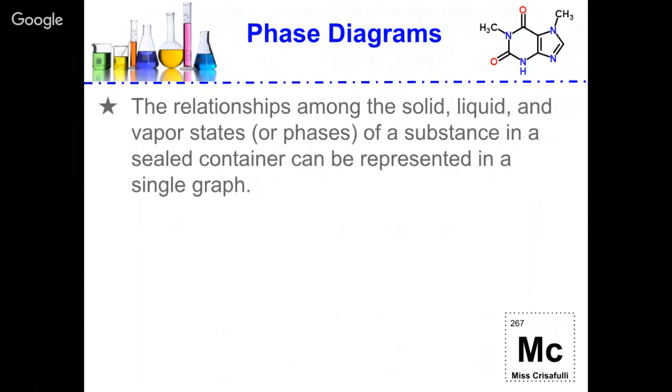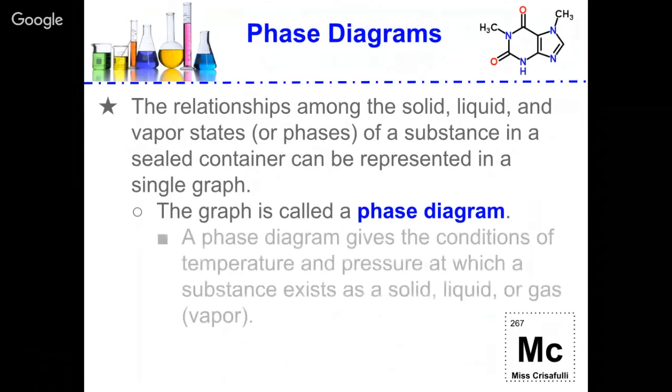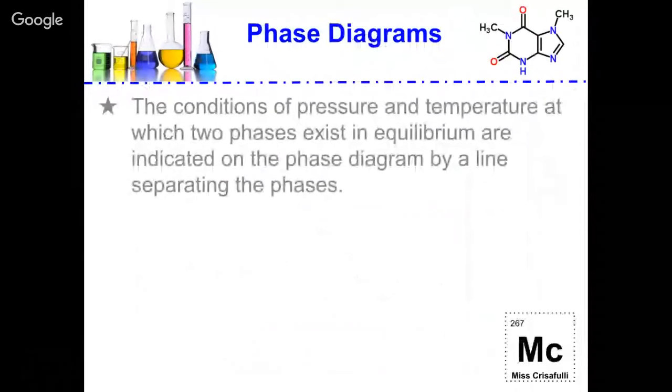The relationships among the solid, liquid, and vapor phases of a substance in a sealed container can be represented in a single graph. This graph is called a phase diagram. A phase diagram gives the conditions of temperature and pressure at which a substance exists as a solid, liquid, or gas.